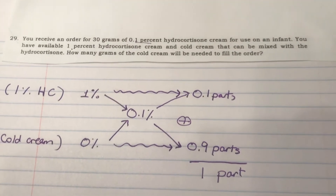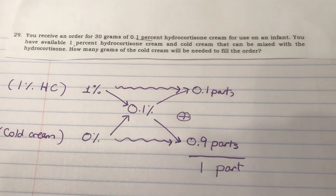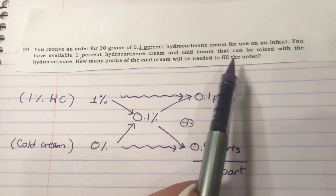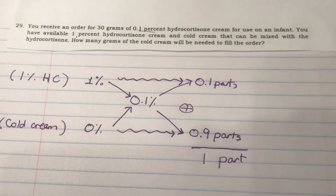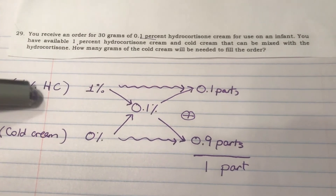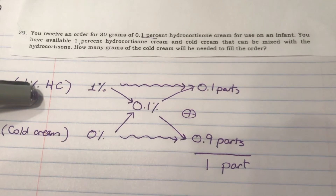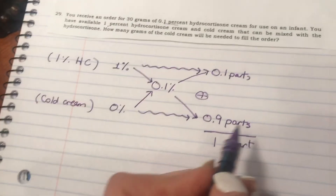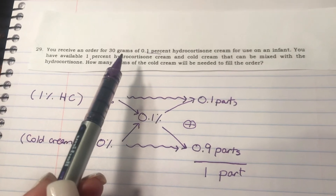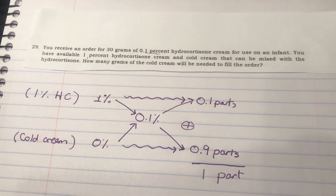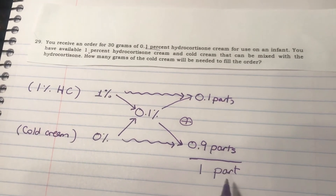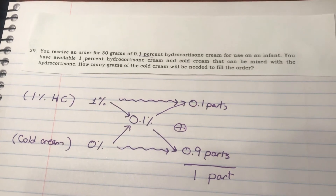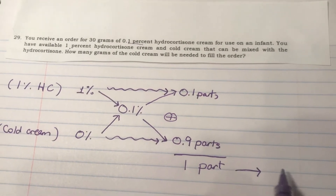Let's see what the question is actually asking. They want to find out how many grams of the cold cream will be needed to fill the order. It's very important to read the requirement carefully — they are not asking for the grams of the hydrocortisone with the active ingredient; they're asking for the grams of the cold cream, which is essentially the filler. Now, you know the order required 30 grams of the 0.1% hydrocortisone. One part of the 0.1% hydrocortisone is equivalent to the 30 grams you're going to be compounding.